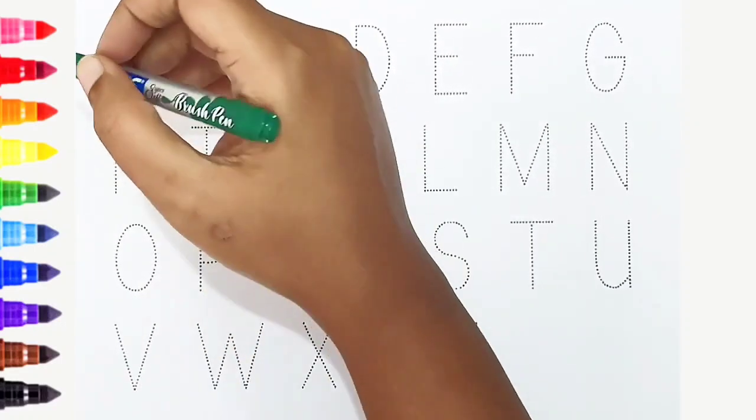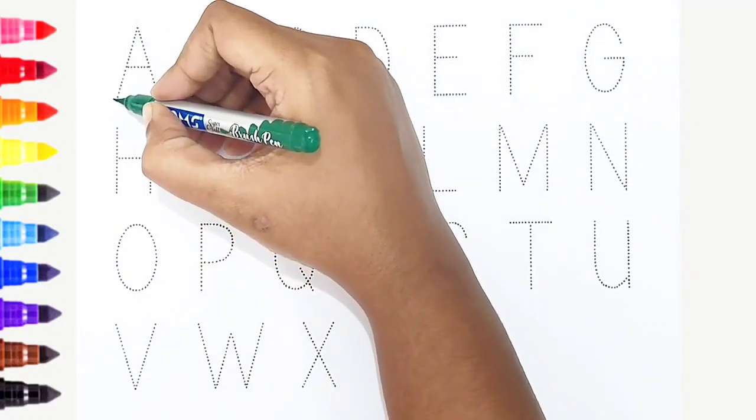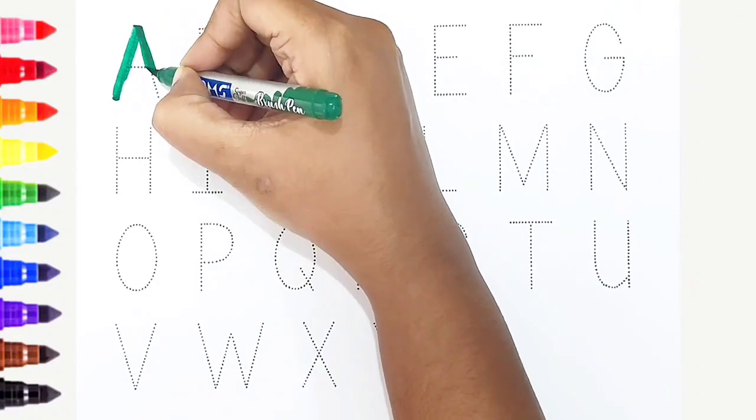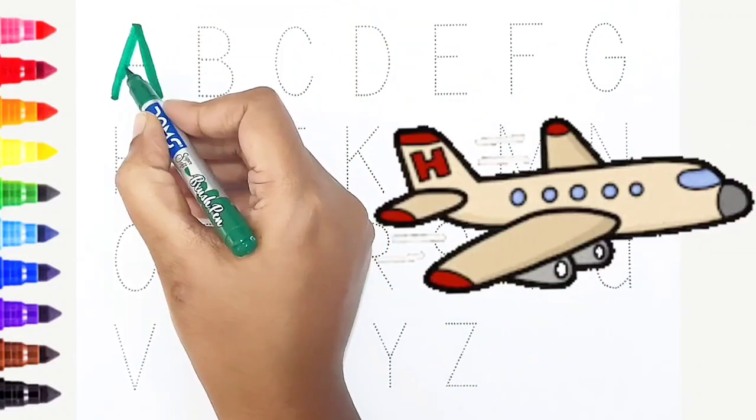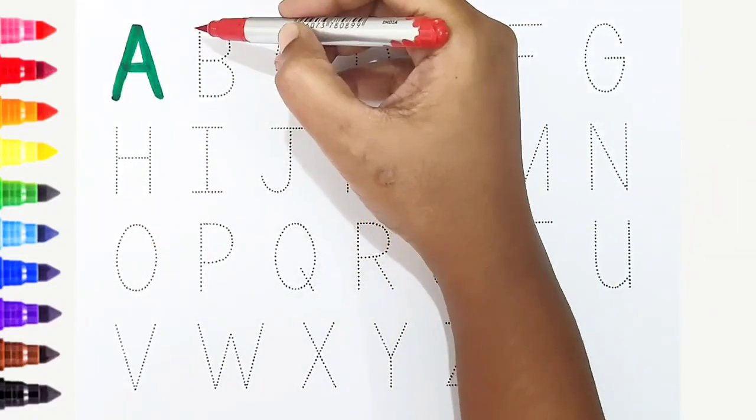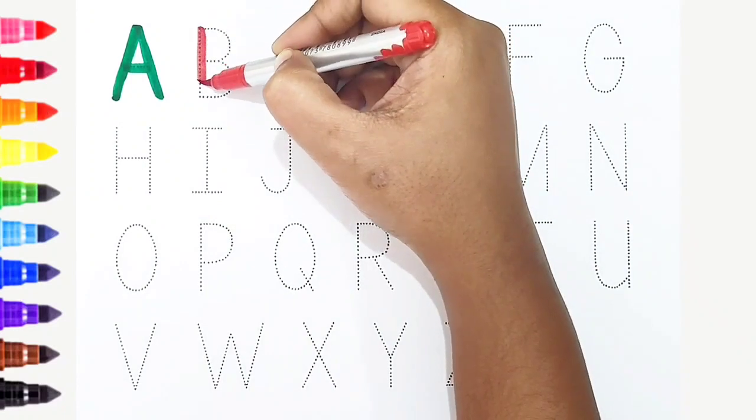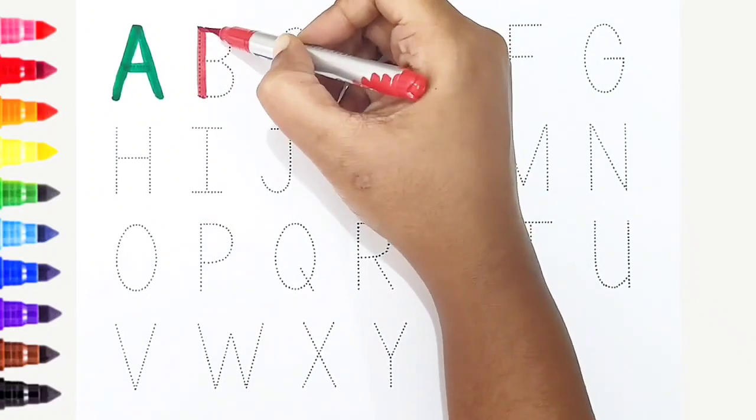A, dark green color. A is for aeroplane. B, red color. B is for buffalo.